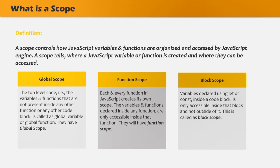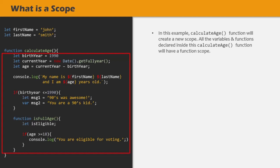Then we have function scope. Each and every function in JavaScript creates its own scope. The variables and functions created inside any other function are only accessible inside that function — this is also called local scope. For example, inside this calculateAge function, we are creating three variables: birthYear, currentYear, and age. These can only be accessed and used inside the calculateAge function. Similarly, the isFullAge function declared inside calculateAge can only be accessed inside calculateAge; outside, it will not be visible and cannot be called.